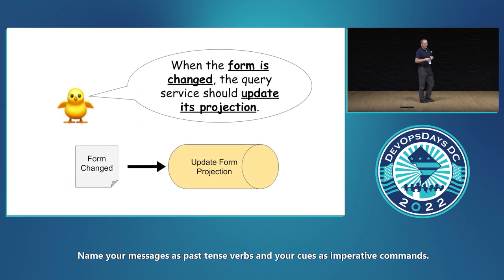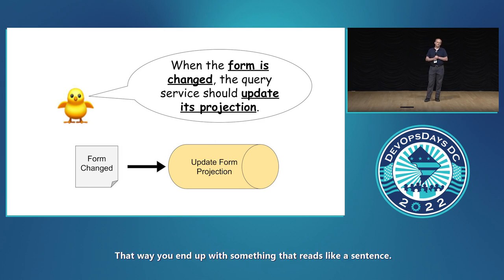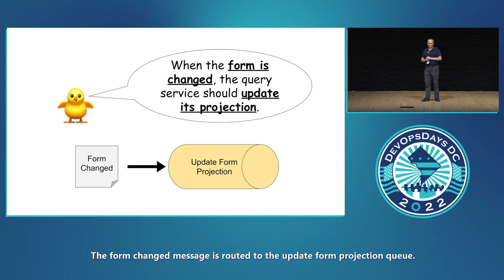Name your messages as past tense verbs and your queues as imperative commands. That way, you end up with something that reads like a sentence: the form changed message is routed to the update form projection queue.